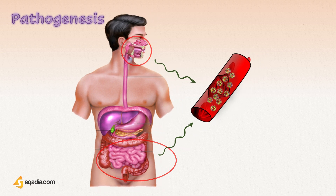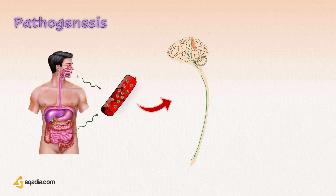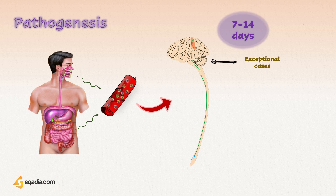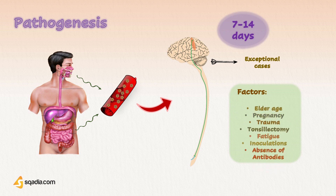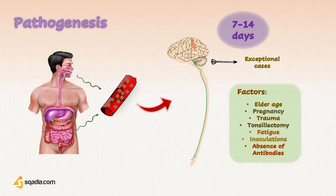Through the blood, the virus reaches the anterior horn cells of the spinal cord and the motor cortex of the brain. The incubation period is usually 7 to 14 days, with extremes of 2 to 35 days. The virus gets widely disseminated in the body but affects the nervous system only in exceptional cases. Involvement of the nervous system depends on factors like older age, pregnancy, trauma, tonsillectomy, fatigue, inoculations, and absence of antibody against poliovirus.